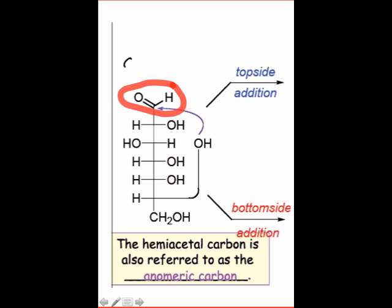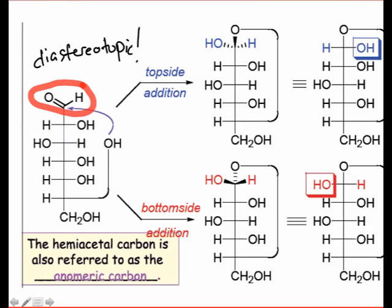As a starting point, we can recognize the top and bottom faces of the carbonyl group in sugars as diastereotopic. Attack of a hydroxyl group at the top and bottom faces of the carbonyl group produces diastereomers, which differ only in configuration at the new stereocenter.